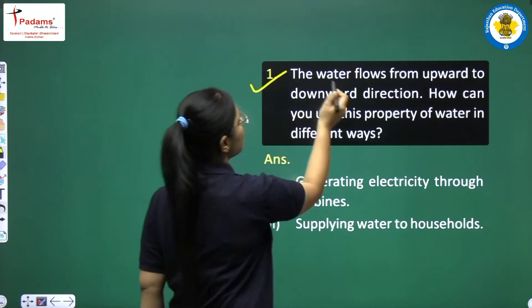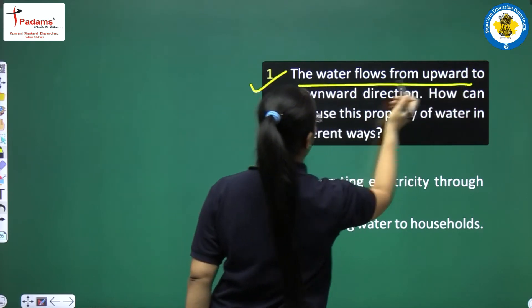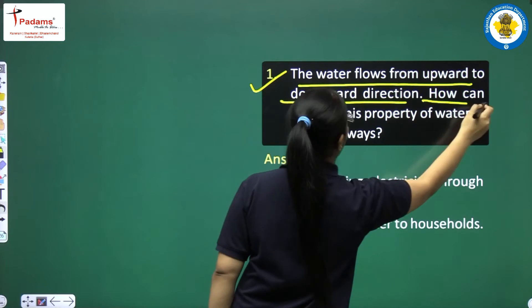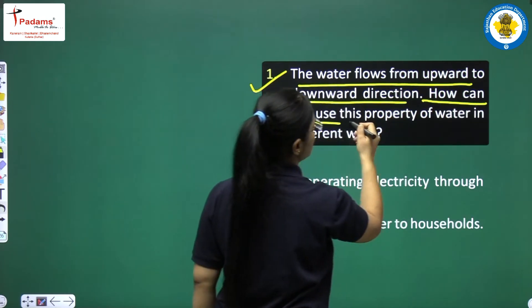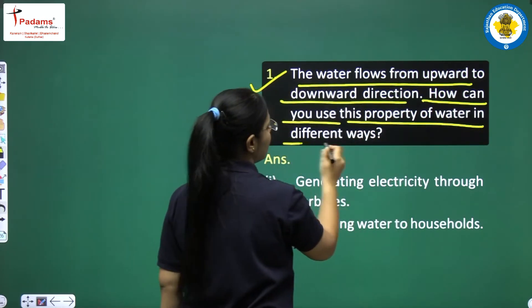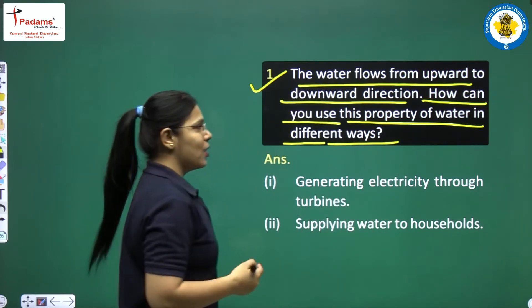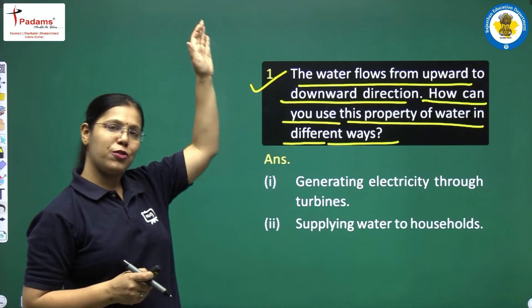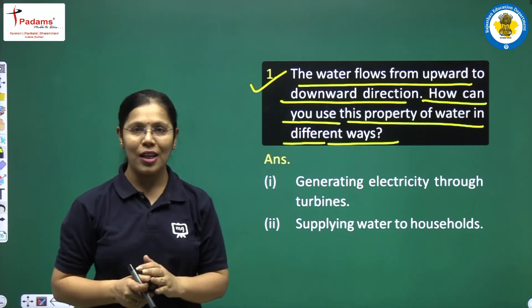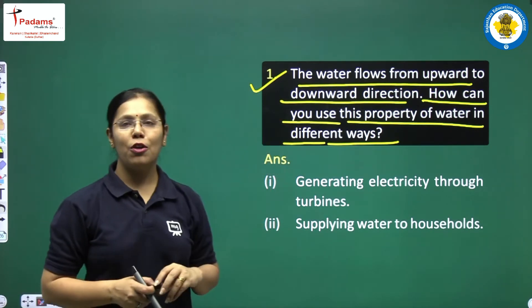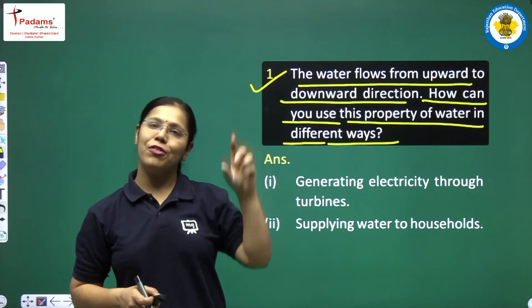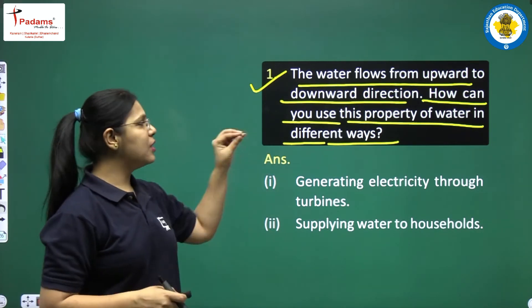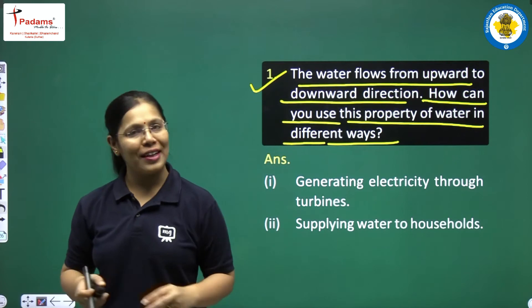Question number 1 here is: the water flows from upward to downward direction. How can you use this property of water in different ways? You are being asked that we know water flows from upward to downward direction, and how this property can be used in different ways.